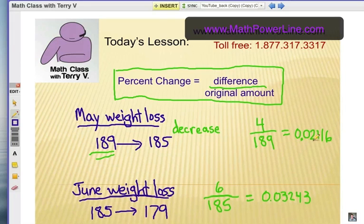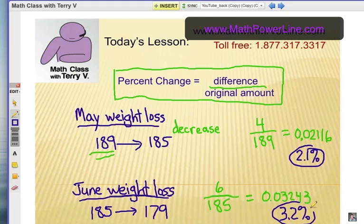So in May, the percent is 0.02116. And of course, we have to move the decimal point over, and that would be 2.1 percent decrease in your weight in May. And in the bottom example, would be 3.2 percent. So obviously, you were more successful in losing weight in June than you were in May.